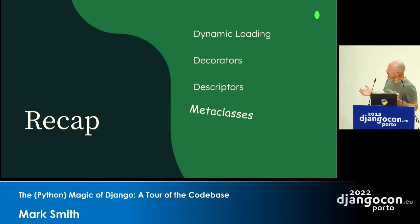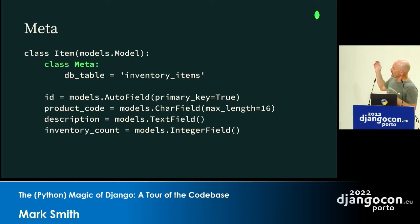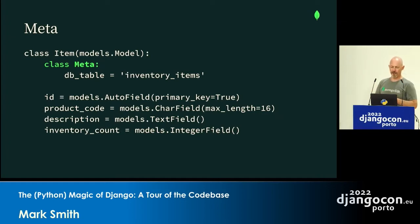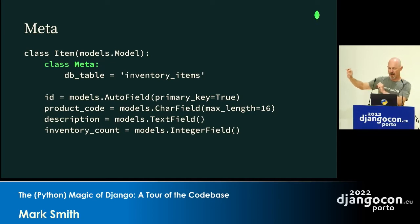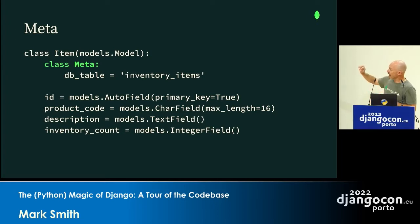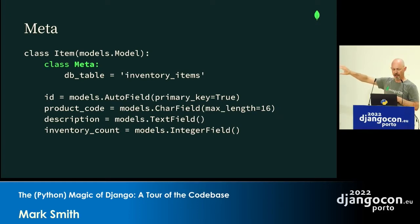Now let's look at metaclasses. We all know what metaclasses are — they're those inner classes you define on models where you specify things like the name of the table you want to store data in. It was only writing this talk that I realized that 'Meta' in this context may not be short for 'metaclass' — it may be short for 'metadata', which would be a better name. Either way, this is not a Python metaclass. I'll argue it could be a Django metaclass, and that inner class is used by a Python metaclass.